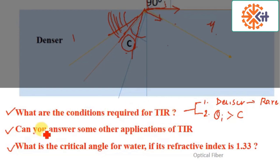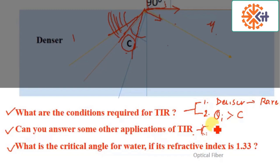The second question is: can you name some other applications of total internal reflection? There are many applications — to increase the brilliance of precious stones, in periscopes used to see the sea surface from a submarine, and in natural phenomena like the formation of rainbows or mirages, where total internal reflection is observed.